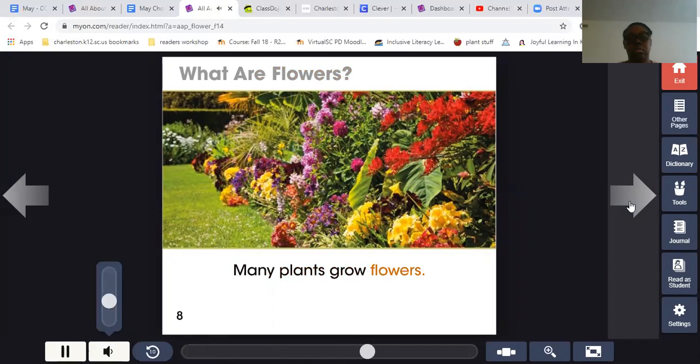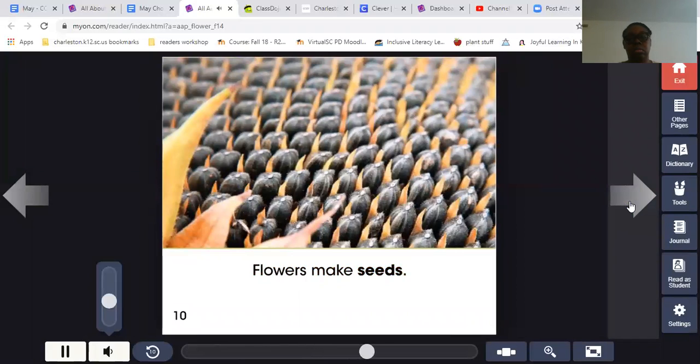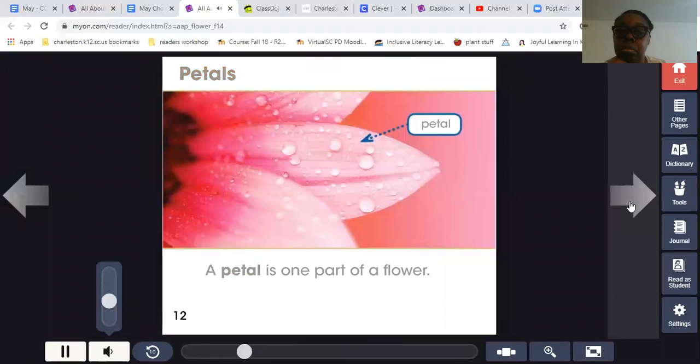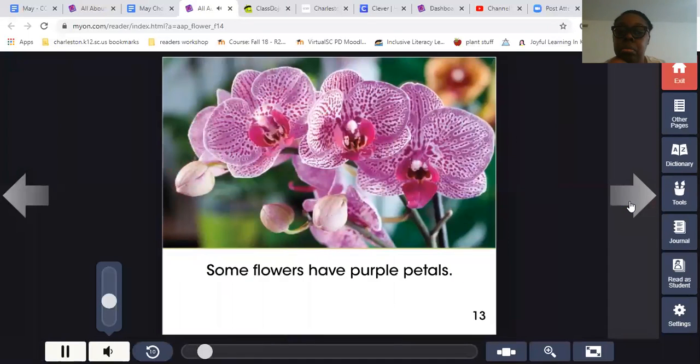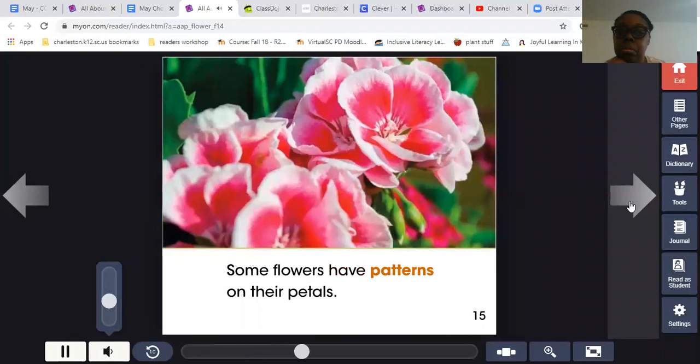What are flowers? Many plants grow flowers. Some plants have one flower. Some plants have lots of flowers. Flowers make seeds. What kind of seeds are those? They look like sunflower seeds. New plants grow from seeds. Petals. A petal is one part of a flower. Some flowers have purple petals. Some flowers have red petals. Some flowers have patterns on their petals.